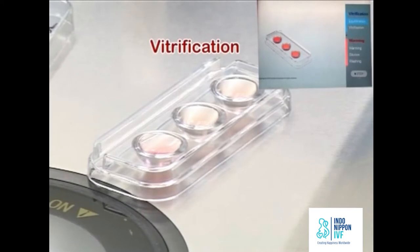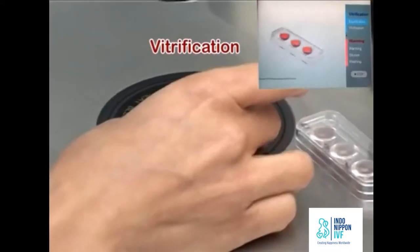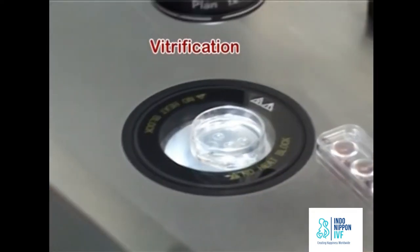Use a pipette that has the right suitable internal diameter to minimize the volume of vitrification solution. Take the culture dish containing oocyte out of the incubator.